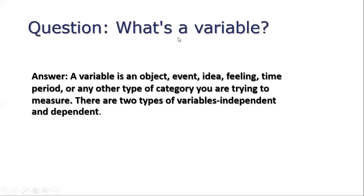What's a variable? A variable is an object, event, idea, feeling, time, period, or any other type of category you are trying to measure.